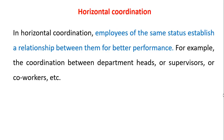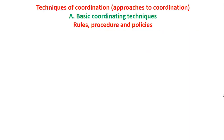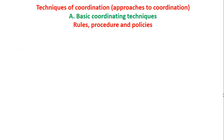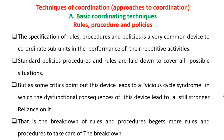Here we can learn two more coordinations: procedural coordination and substantive coordination. Procedural coordination means the specification of the organization itself — that is, the generalized description of the behaviors and relationships of the members of the organization. Substantive coordination is concerned with the content of the organization's activities.